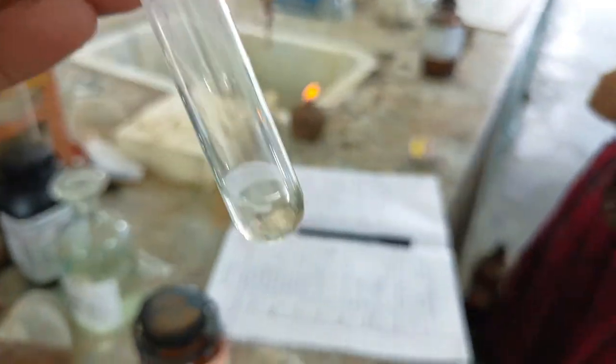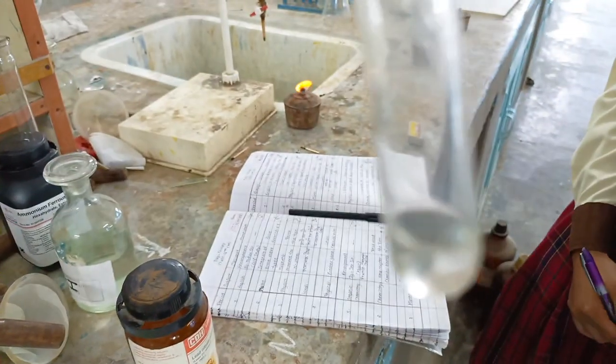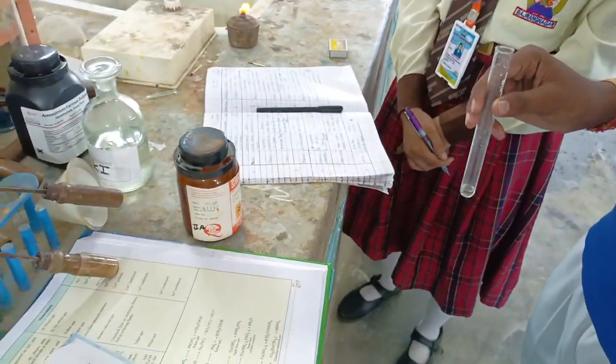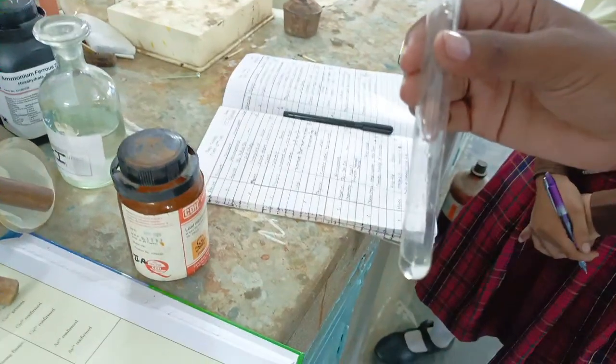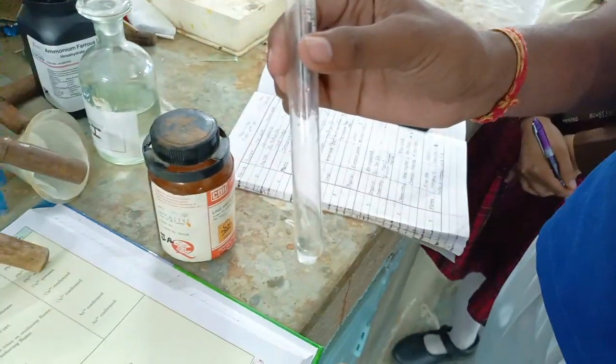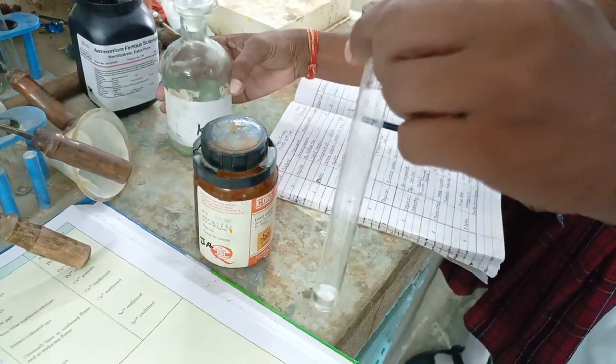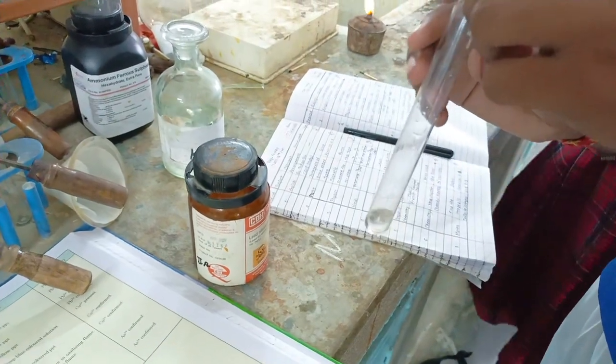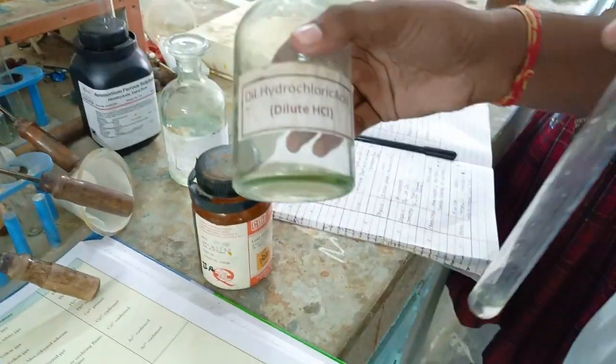That is the original solution. After taking the original solution, we will add dilute HCl to this original solution. After adding the dilute HCl, white precipitate will form.